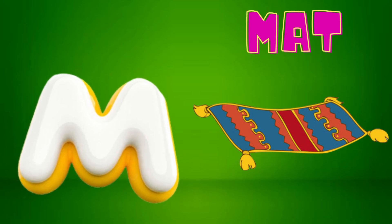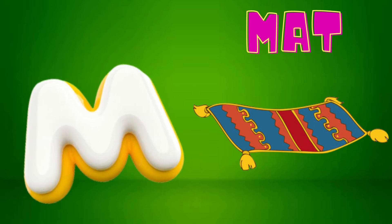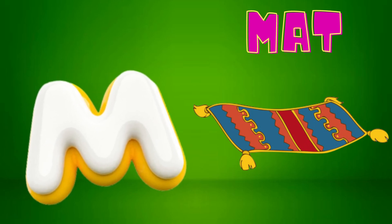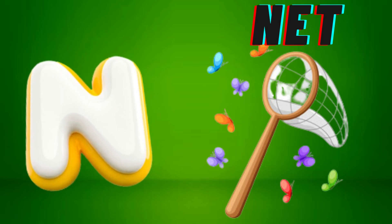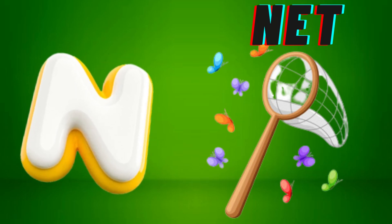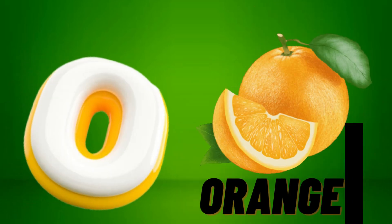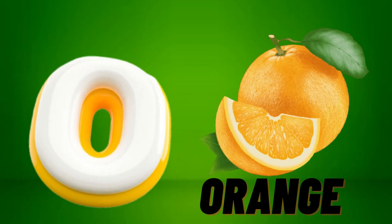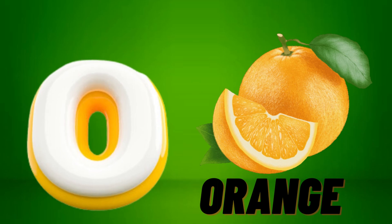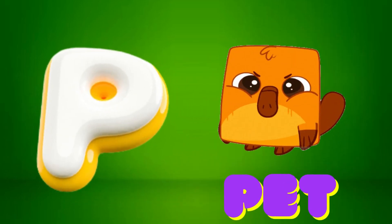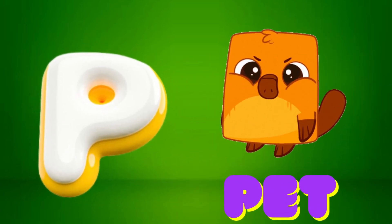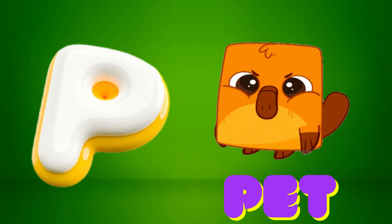M is for Mat, M-M-Mat. N is for Net, N-N-Net. O is for Orange, O-O-Orange. P is for Pet, P-P-Pet.